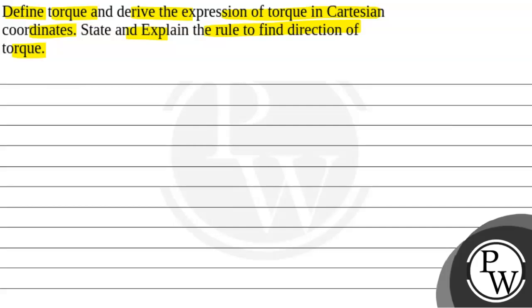So we will solve this question. First of all, we will see what will be the key concept used to solve this question. The key concept that will be used to solve this question will be torque, which is denoted by tau, that is equal to f cross r sin theta, or tau equals r cross f.